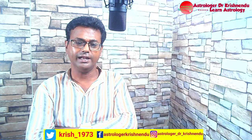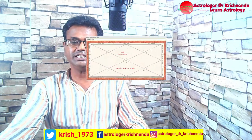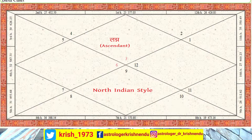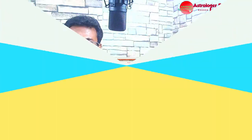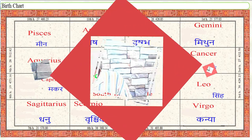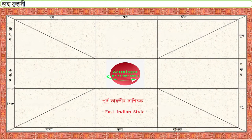A birth chart or horoscope, also called Kundali in India, can be called a map of planetary positions at the time of birth. There are several different ways of portraying a birth chart in different parts of India. Mainly, a horoscope is drawn in three major ways: North Indian style, South Indian style, and East Indian style, also called Bengali style.